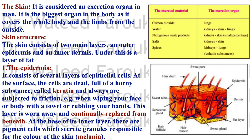The skin structure is composed of three layers: the epidermis, dermis, and hypodermis, which is connective tissue. The epidermis consists of several layers of epithelial cells. The upper layer is a dead cell layer that forms a layer of keratin on top, which is continuously shed and replaced from beneath. At the base of the inner layer there are pigment cells containing the dye melanin for skin pigmentation.